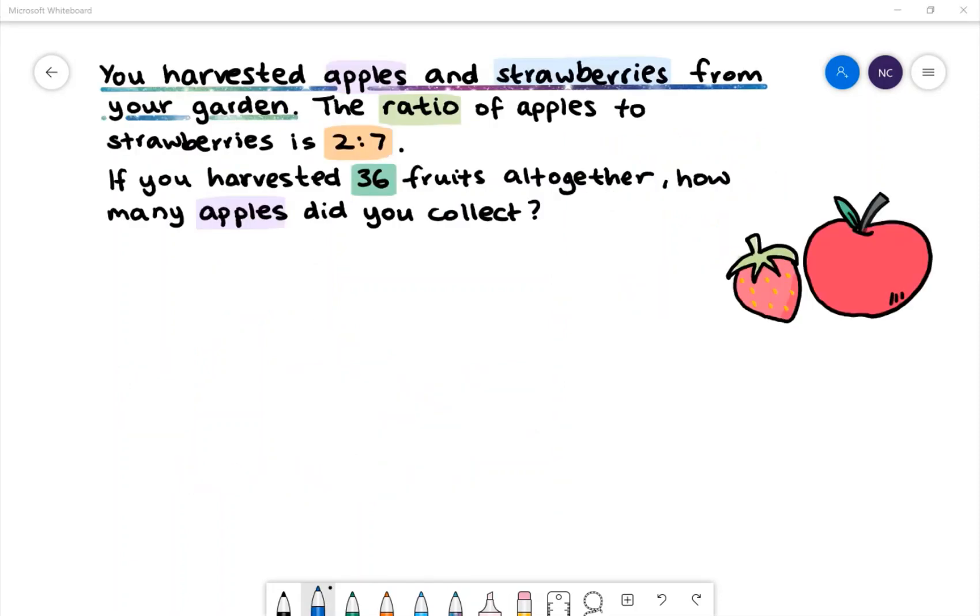Here is our next example. You harvested apples and strawberries from your garden. The ratio of apples to strawberries is 2 to 7. If you harvested 36 fruits altogether, how many apples did you collect?